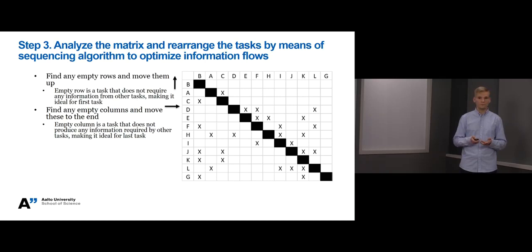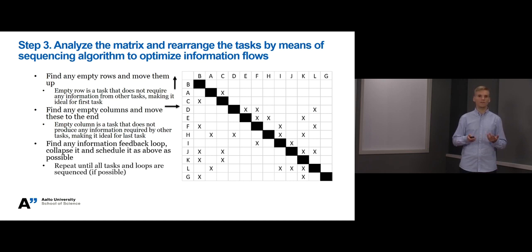Well, first we try to identify any information feedback loops between tasks. Then we move the tasks that cause information feedback loops as upfront as possible in the matrix to eliminate or minimize information feedback loops. We repeat this until all tasks and loops are sequenced if possible. So, in practice this is a kind of an iteration exercise. Let's practice this together.